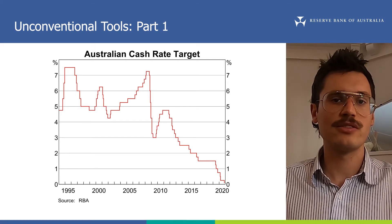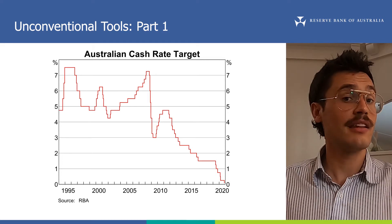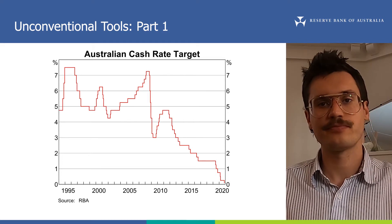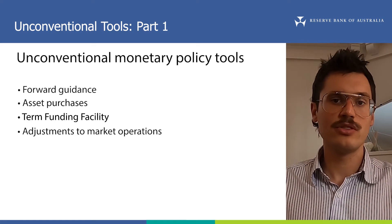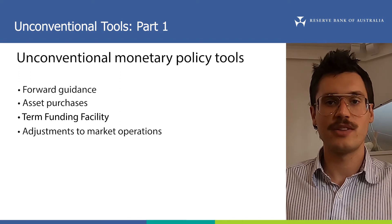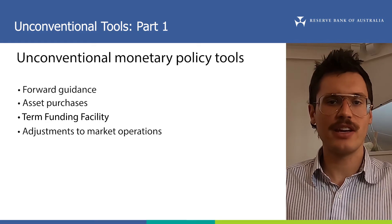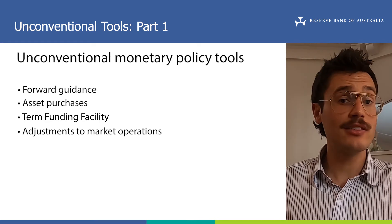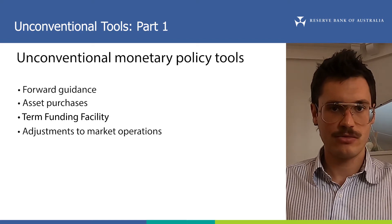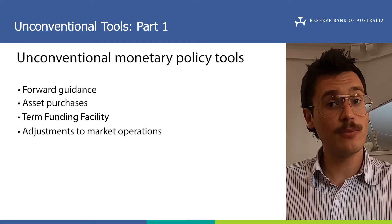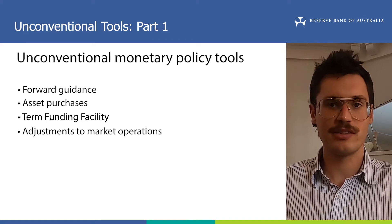These tools allow the RBA to influence a range of interest rates, other than the cash rate, that are still higher than their lowest practical levels. This is a list of the different unconventional monetary policy tools used by the RBA in response to COVID-19. Even though these tools are unconventional, they are always part of the RBA's toolbox, and the RBA has used several of them before. We call them unconventional because they did not traditionally take a front seat in helping central banks around the world, including the RBA, to achieve their monetary policy objectives.